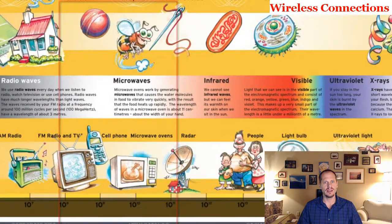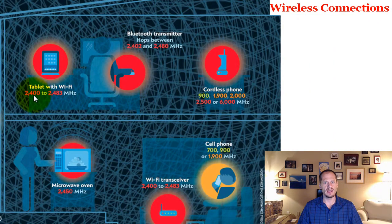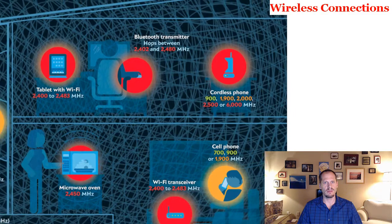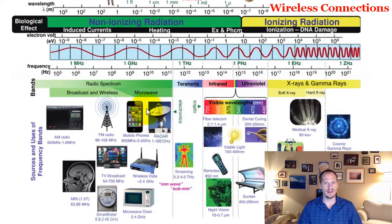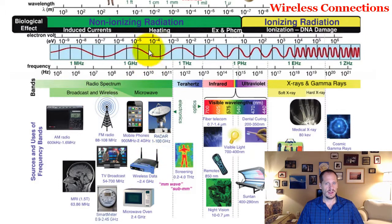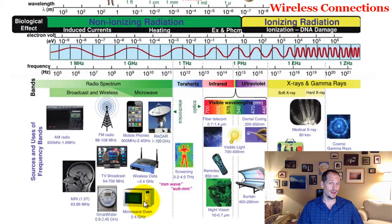Wi-Fi is 2400 to 2483 megahertz — 2.4 gigahertz on the spectrum. Here we also have microwave ovens, radar, and mobile phones, all in that same range. It's interesting that all this is non-ionizing, meaning it's not going to cause cancer. But it's kind of interesting that your Wi-Fi router, your cellular phone, and the microwave that makes water boil are all right in the same category on the spectrum.